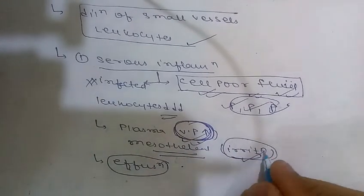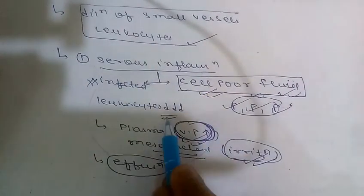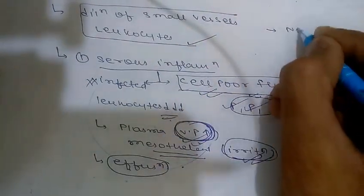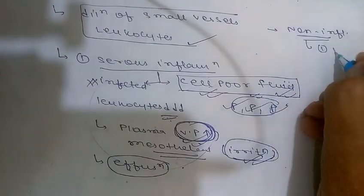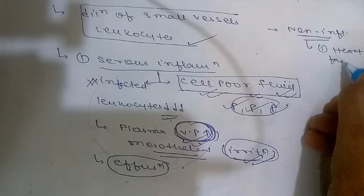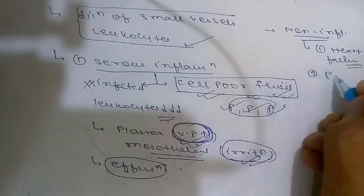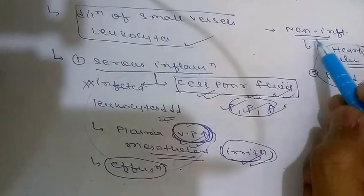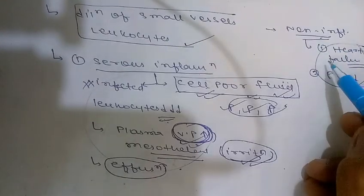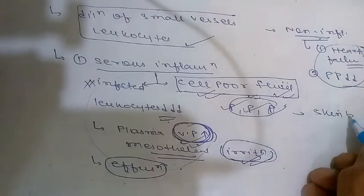Serous effusion can also occur in non-inflammatory conditions. The first non-inflammatory cause is heart failure, due to reduced outflow; the second is reduced plasma proteins in kidney or liver diseases. These are two important non-inflammatory reasons for serous fluid accumulation.